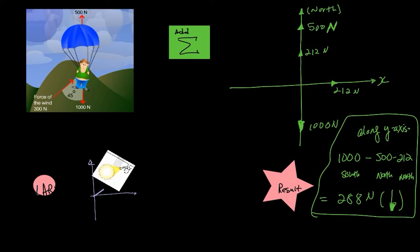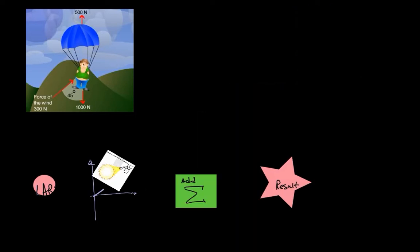Along the x-axis, that's pretty easy. I only have one component of 212.